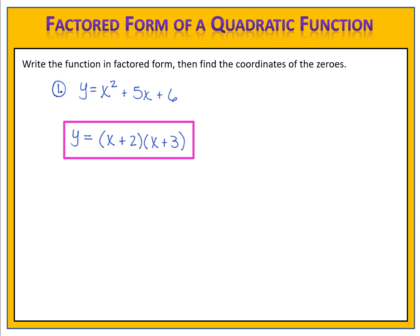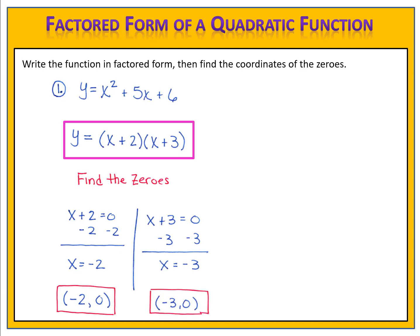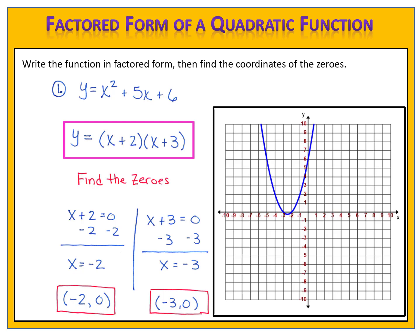Now we can use those factors to find the coordinates of the zeros. We take each of the factors, x plus 2 and x plus 3, and set them equal to zero so that we have two small equations. We then solve each of those equations for x. In the first one, we end up with x equals negative 2; in the second, x equals negative 3. Those are the x values of the zeros, located at negative 2 comma 0 and negative 3 comma 0. The graph passes through the x-axis at those two points.